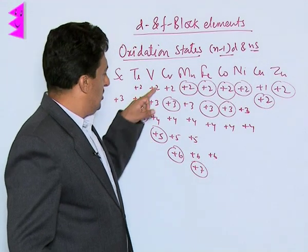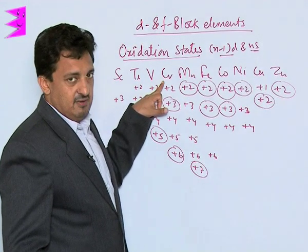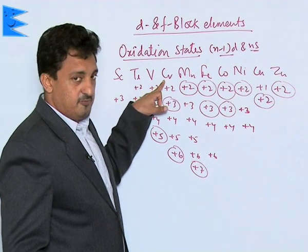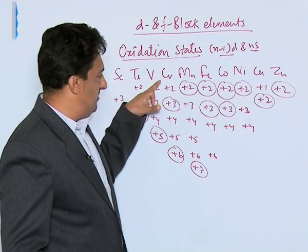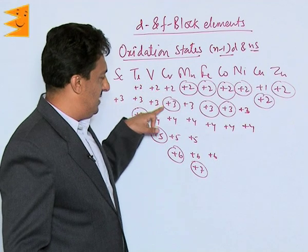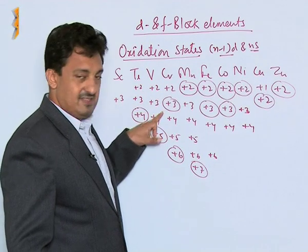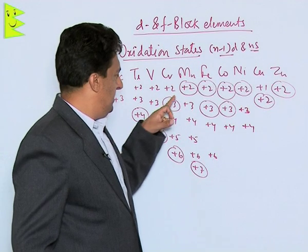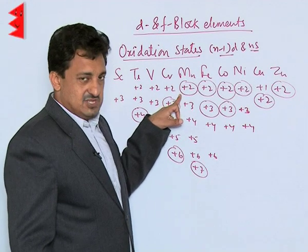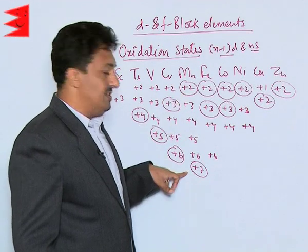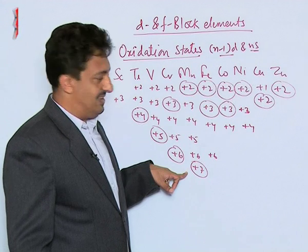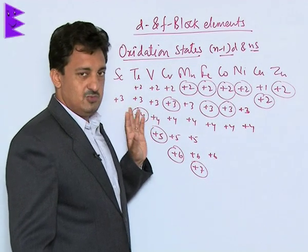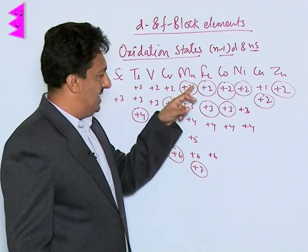Chromium, being in group 6, has six valence electrons, so it shows +2, +3, +4, +5, and +6, with +3 and +6 being the most common oxidation states. Manganese, in group 7, has seven valence electrons and can go up to +7. Its oxidation states range from +2 to +7, and +2 and +7 are its most common ones.